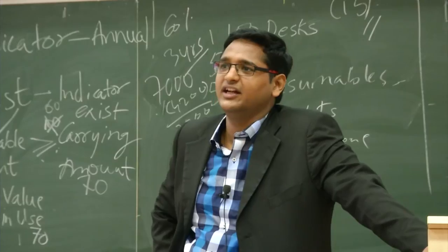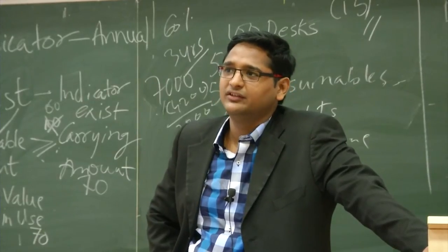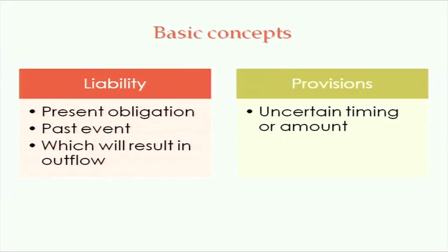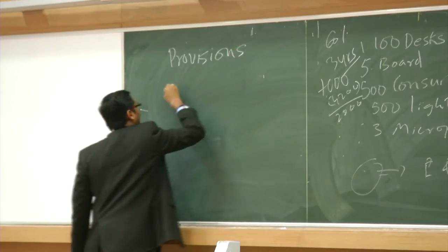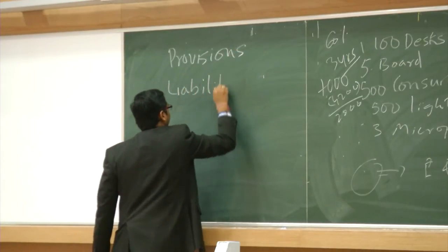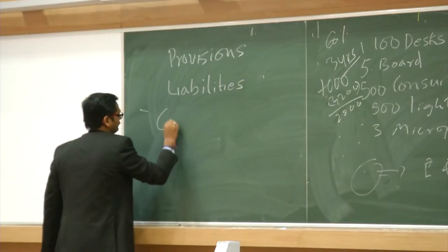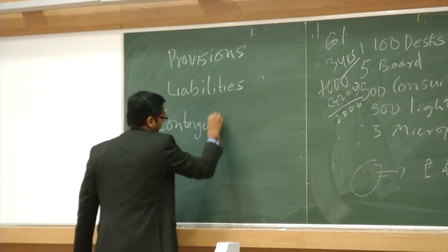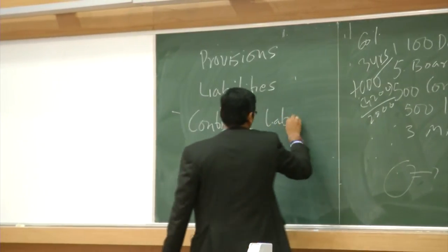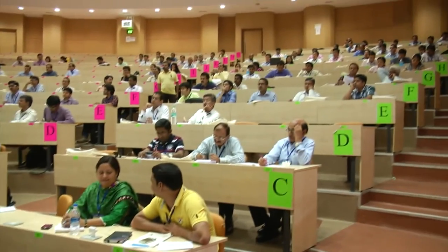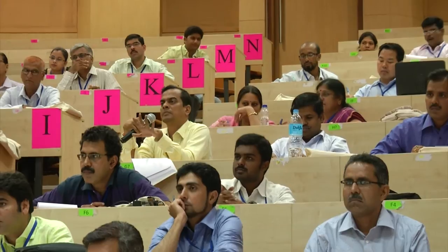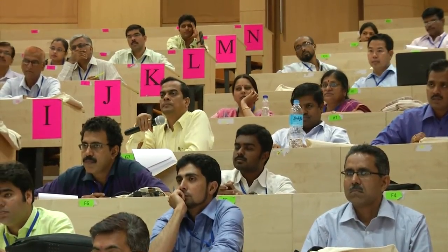Last session covered AS 29 provisions, contingent liabilities, and contingent assets. Can you explain the difference between provisions and liabilities? A provision is just an estimate that can be changed in the future. A liability is fixed — whatever we have to pay. Provision is an estimate; liability is final, a fixed amount we have to pay.